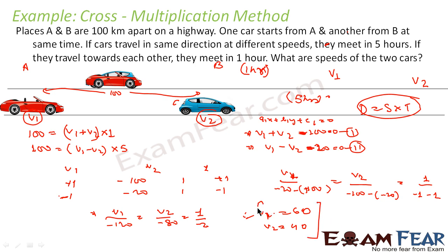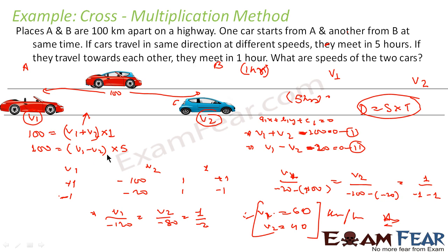Car A has speed V1 = 60 km/h and car B has speed 40 km/h. We understood this graphically and then wrote the equation: 100 km equals (V1 plus V2) times 1 when they approach each other, and (V1 minus V2) times 5 when they go in the same direction — and we got the answer.